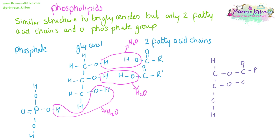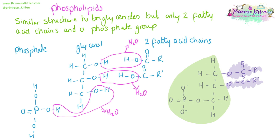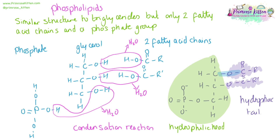Drawing out the phospholipid, it looks very similar at the start to a triglyceride, with our two fatty acid chains being added on to glycerol. But instead of the third fatty acid chain, a phosphate group goes in its place. The phosphate group and the glycerol will become known as the phosphate head, which is hydrophilic. The fatty acid tails are hydrophobic. Just as with triglycerides, the bond formed here is an ester bond.